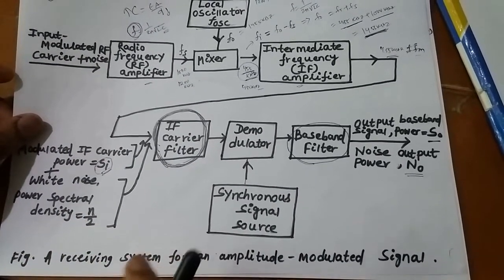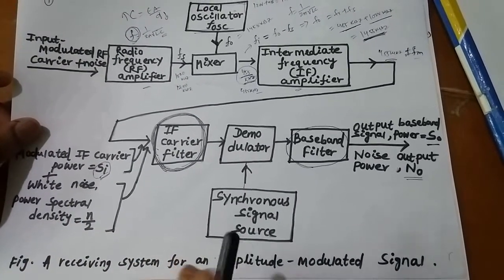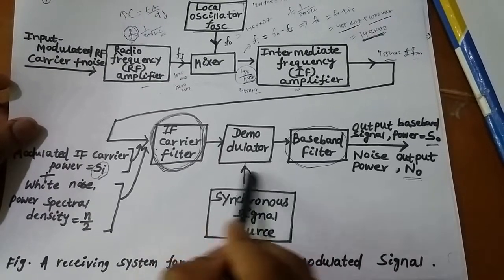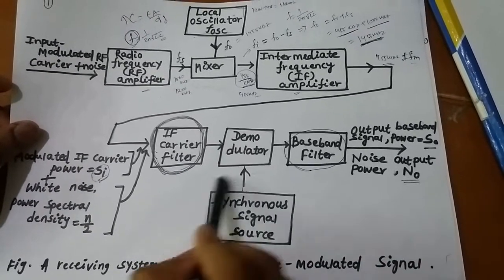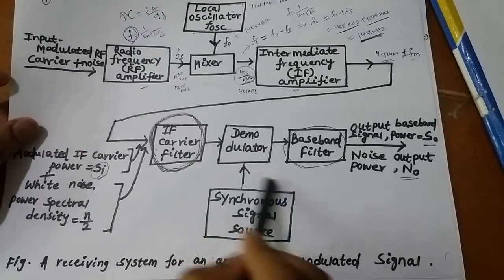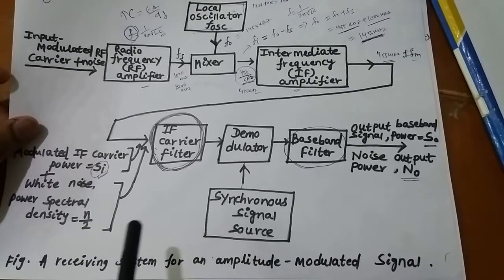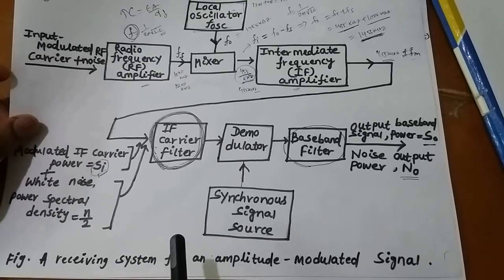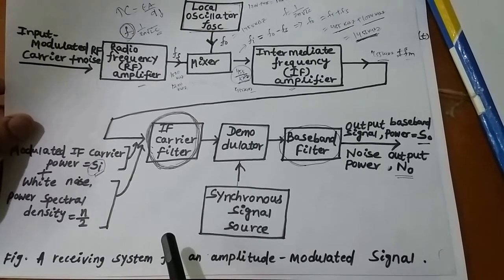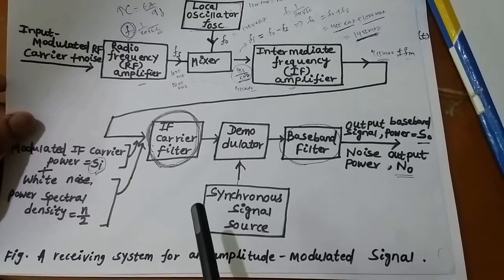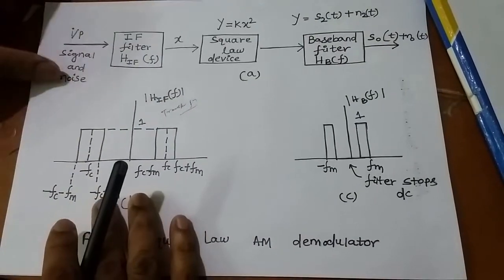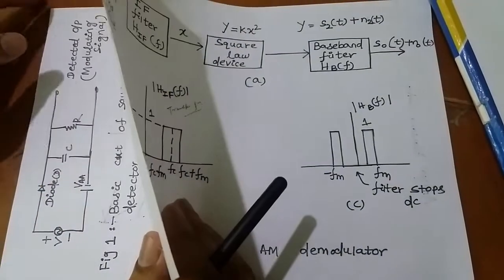The problem with the synchronous detector is that at the receiving end, exact synchronization is required, which is a costly affair. So demodulation can also be done using a nonlinear device like the square law demodulator.